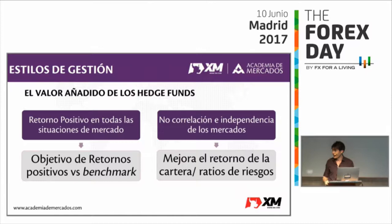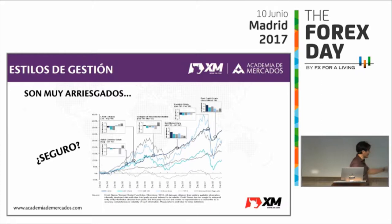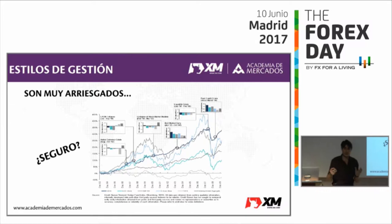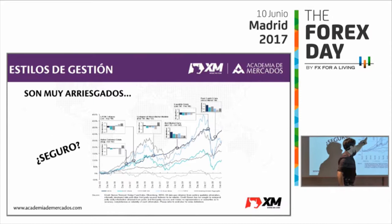Este tipo de trading automatizado: '¿es muy peligroso porque como no estoy encima mirándolo es una cosa muy arriesgada, los hedge funds son muy arriesgados?' Pues veámoslo. Aquí tenemos un histórico desde el año 93 hasta 2009, en el que la línea azul más oscura es un índice de hedge funds a nivel mundial. Tenemos la crisis del año 97 de divisa en Asia, la bolsa mundial MSCI World, el S&P 500, el Dow Jones, el Eurostoxx, el Topix de Japón y la renta fija.